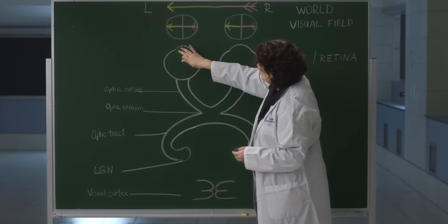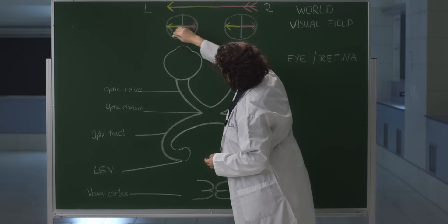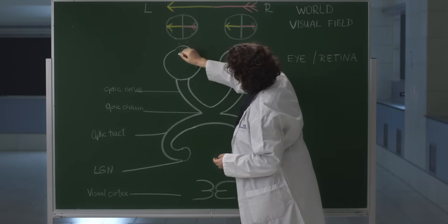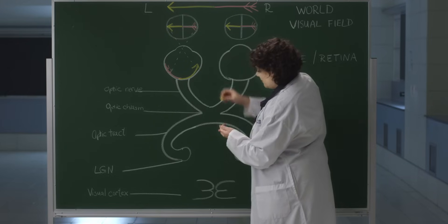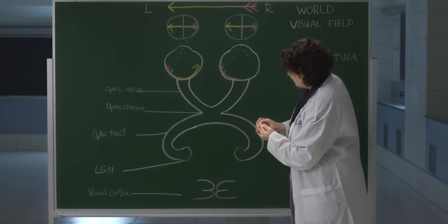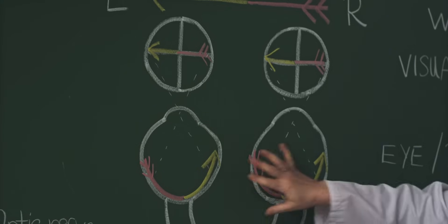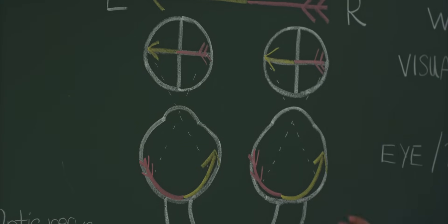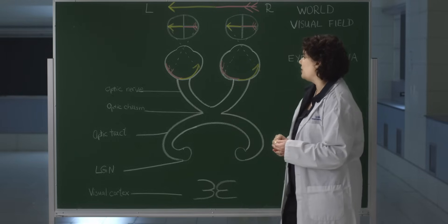But how does this visual field project onto the retina? Due to the refraction at the cornea, the image is now reversed, and the same is true for the other eye. Now we have two retinal representations of the world.